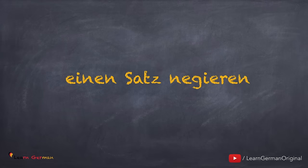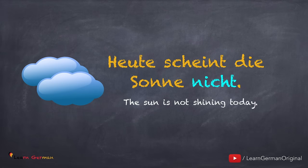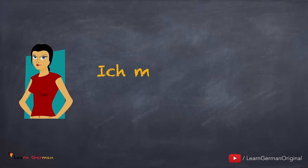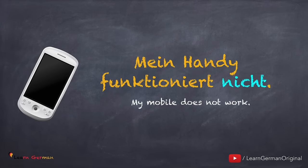Wie kann man einen Satz negieren? Wenn man einen Satz negiert, dann steht NICHT ganz am Ende. We will first learn how you can negate a complete sentence. To be able to do that, you have to place NICHT at the end of the sentence. Hier sind ein paar Beispiele: Leider verstehe ich nicht. Heute scheint die Sonne nicht. Ich mag dich nicht. Mein Handy funktioniert nicht. In allen diesen Beispielen kann man sehen, dass NICHT immer am Ende steht.